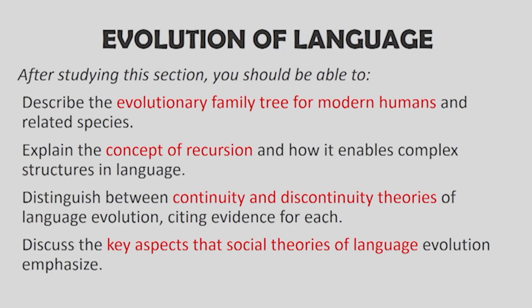How did human language or language in general evolve? In this section we will describe the evolutionary family tree of modern human language and its latest concepts. We look at the concept of recursion, which is believed to explain how complex languages actually propagated or started. We look at the continuity and discontinuity theories of language evolution — one says language evolved slowly over a period of time, while the discontinuity theory says language evolved rapidly from one single mutation — and then we will discuss key aspects of social theories of language evolution.